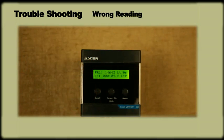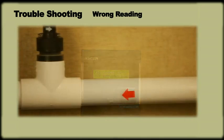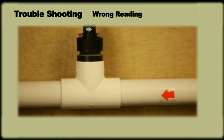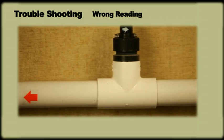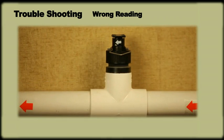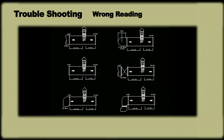If the meter shows error in reading, it could be because of the following reasons. Check the direction of the arrow and see if it is in the correct orientation. If adequate straight run is not provided at upstream and downstream of the sensor, then provide straight run as per guidelines.